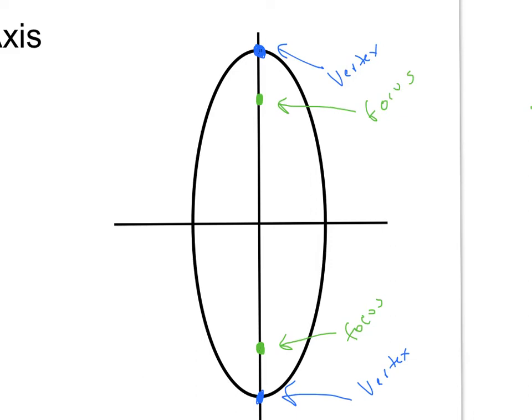So this distance is C. This distance is A. And then last but not least we have our co-vertices which are going to be on the minor axis. And we call it minor because it's smaller.